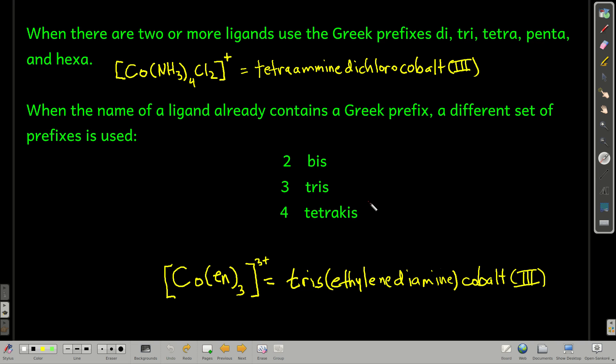If you have two or more ligands, then you use the Greek prefixes di, tri, tetra, penta, and hexa to say how many there are. For example, here, there are four amines, two chloro, so we would say tetramine dichloro, and then we say the name of the metal, cobalt(III).